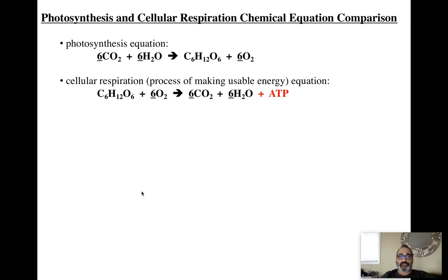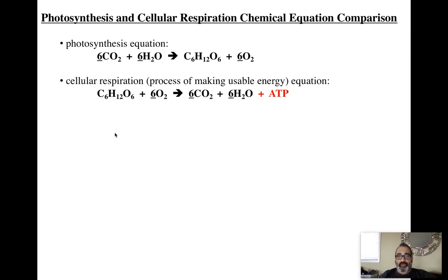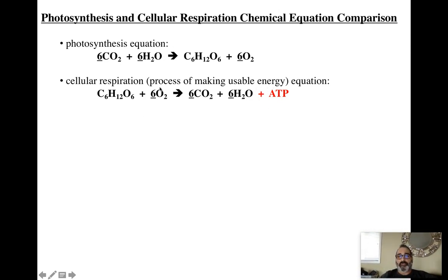Here are the two equations showing photosynthesis and cellular respiration. Our next unit will cover cellular respiration in depth, but notice that the products on the right of photosynthesis are the reactants on the left of respiration — they are kind of reverses of each other. ATP is the main product of respiration. The whole idea of respiration is to make energy — ATP. But to make ATP, heterotrophs like us need food and oxygen, and we depend on those products from photosynthesis.